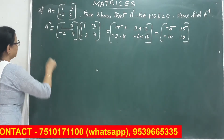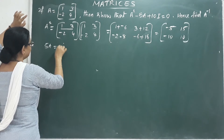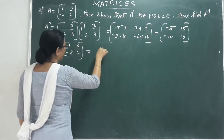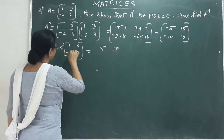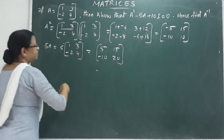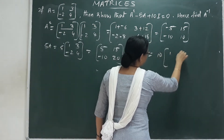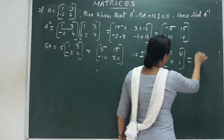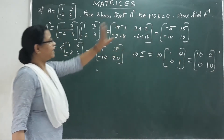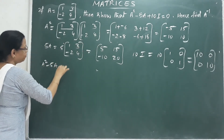Now we find A squared, then 5A. That is equal to 5 times A. And 10I equals 10 times the identity matrix [[1, 0], [0, 1]], giving [[10, 0], [0, 10]]. Now we evaluate A squared minus 5A plus 10I.